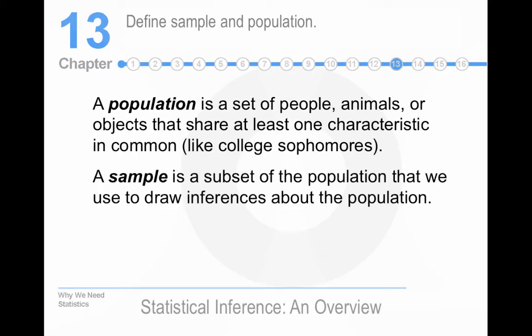So what is a sample and a population? A population is really any set of people, animals, or whatever that have at least one characteristic in common. So it could be college sophomores, it could be American asthmatics, male American asthmatics. They have at least one characteristic in common.